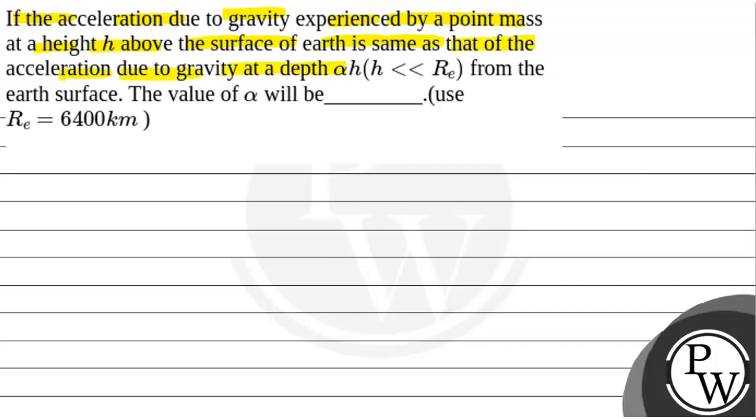...where h is less than the radius of earth from earth's surface. The value of alpha will be—use radius of earth equals 6400 kilometers.